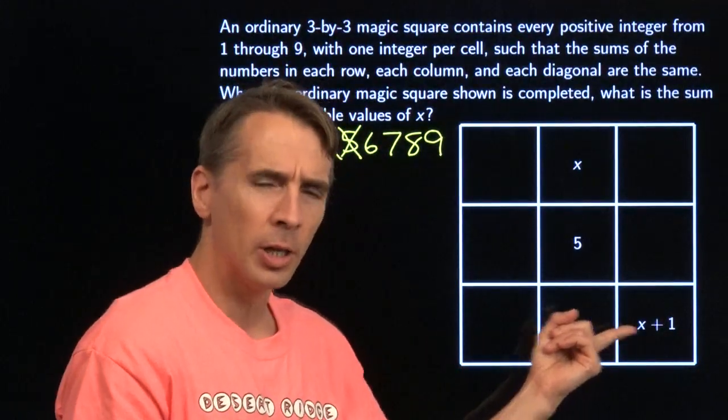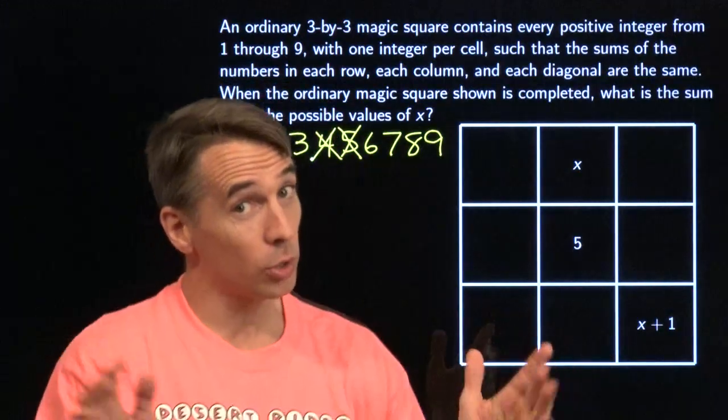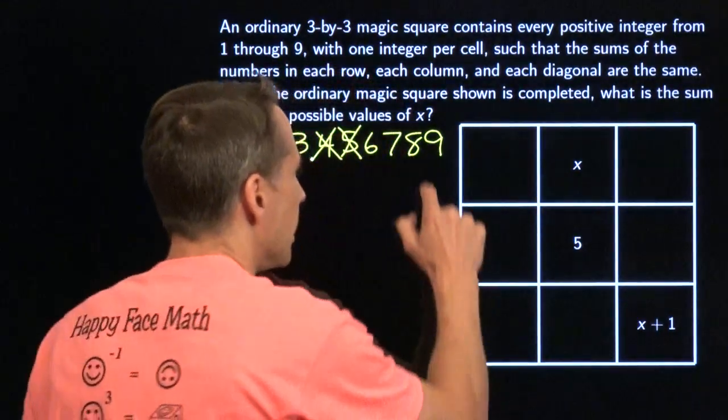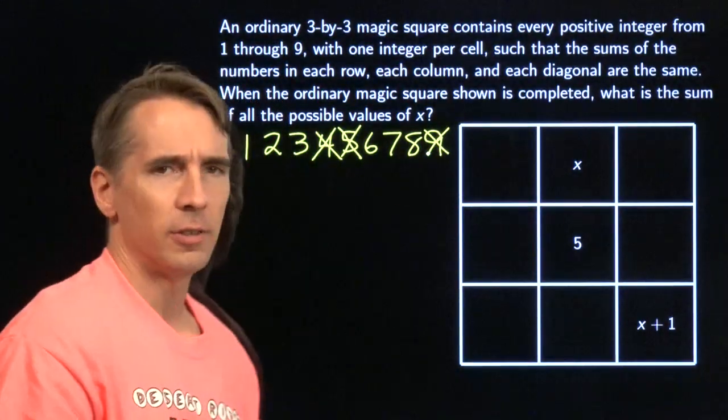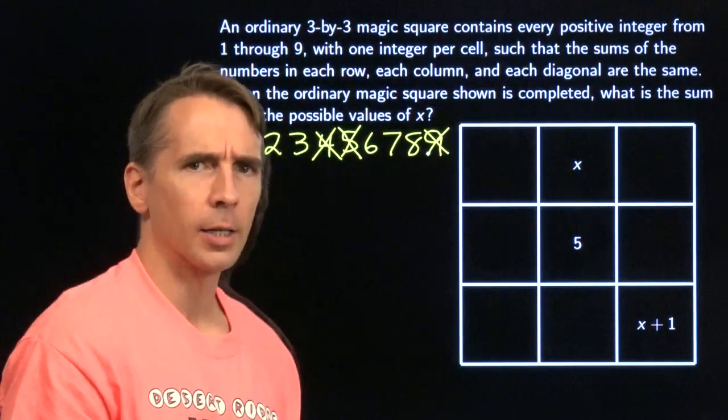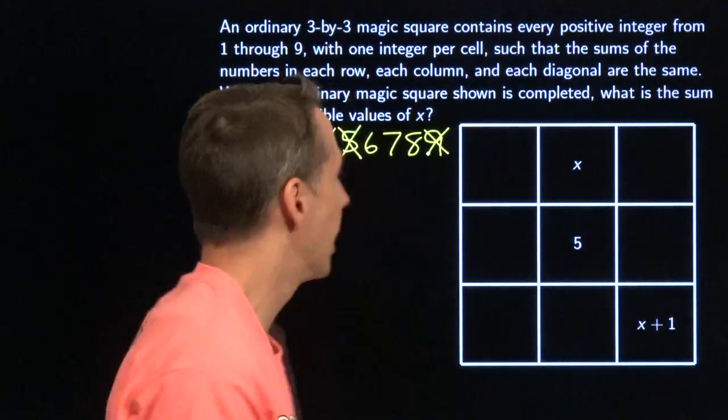If I put 9 down here, 9 plus 1 is 10. I'll have a 10 in one of these cells, and that's no good. Each of these cells has to have a number from 1 to 9. So, x can't be 9. What about the rest of these? I feel stuck.